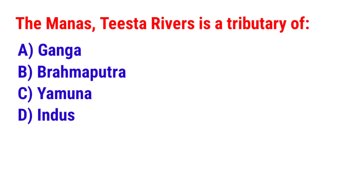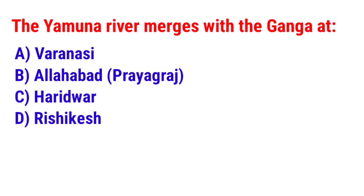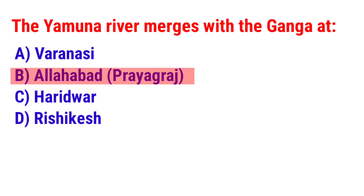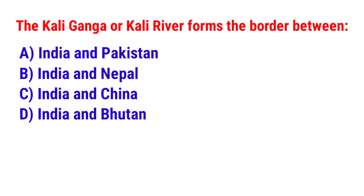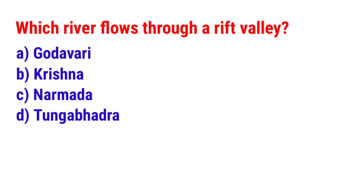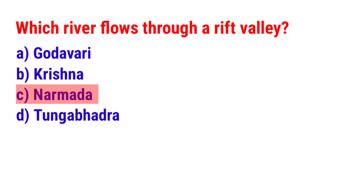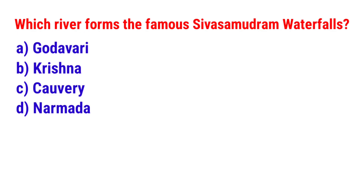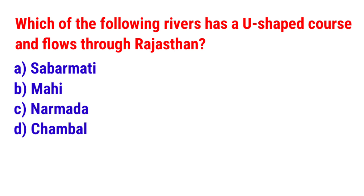Question 41: The Manas and Teesta rivers are tributaries of? The answer is option B — Brahmaputra. Question 42: The Yamuna river merges with the Ganga at? The answer is option B — Allahabad. Question 43: The Kali river forms the border between? The answer is option B — India and Nepal. Question 44: Which river flows through a rift valley? The answer is option C — Narmada. Question 45: Which river forms the famous Shivanasamudra waterfalls? The answer is option C — Kaveri. Question 46: Which of the following rivers has a U-shaped course and flows through Rajasthan? The answer is option B — Mahi.